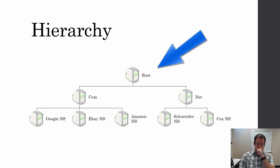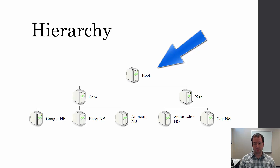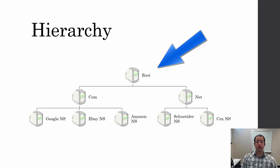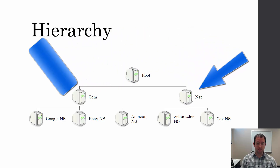That dot represents the root. The root is globally managed and manages DNS for everyone. When the root servers go down, that's bad for everyone. Underneath the root, you have your top-level domains.